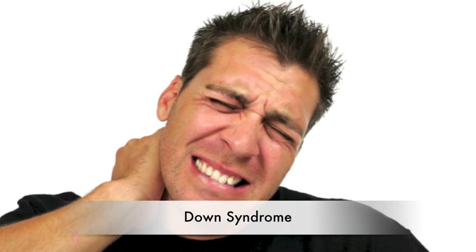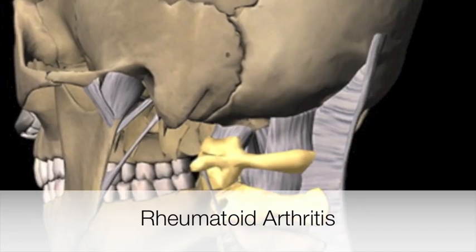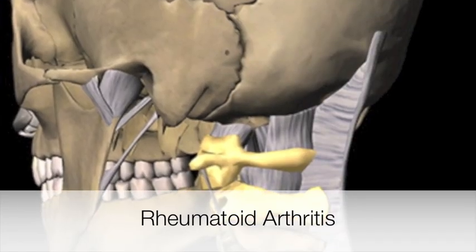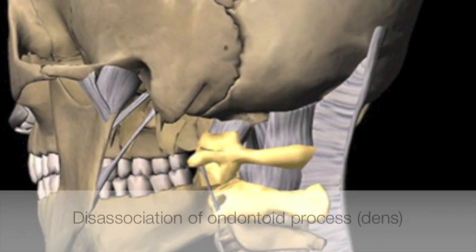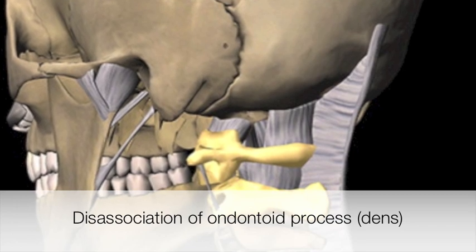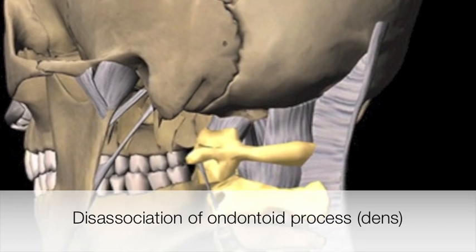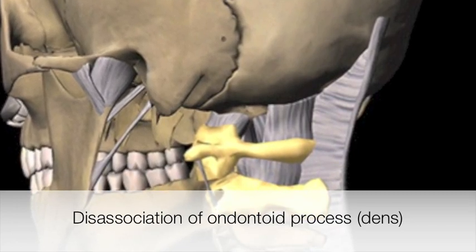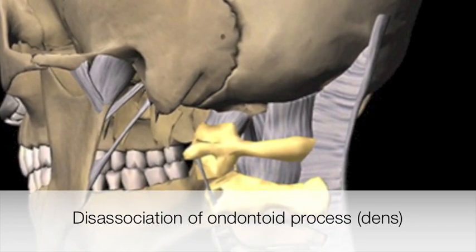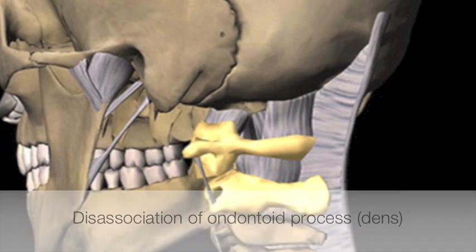Atlantoaxial instability can be caused and associated with a number of different things, to include Down syndrome, rheumatoid arthritis, disassociation of the odontoid process, dens of the axis, and atlas fractures.